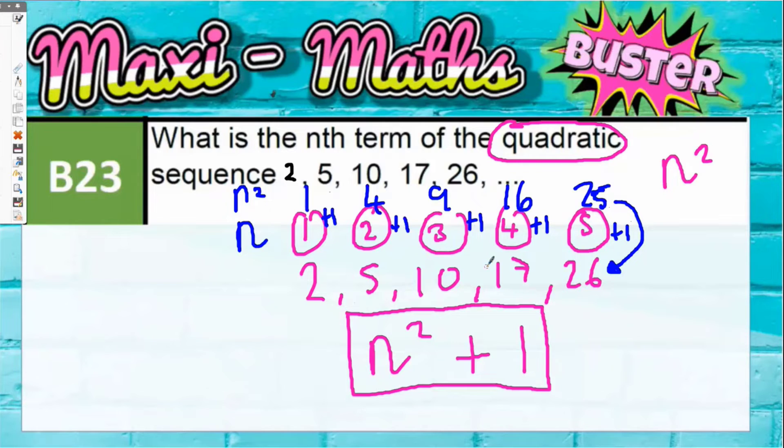This would allow you to find any term in the sequence. So let's say you wanted to find the 20th term. You would do 20 squared plus 1. 20 squared is 400, and 400 plus 1 is 401.